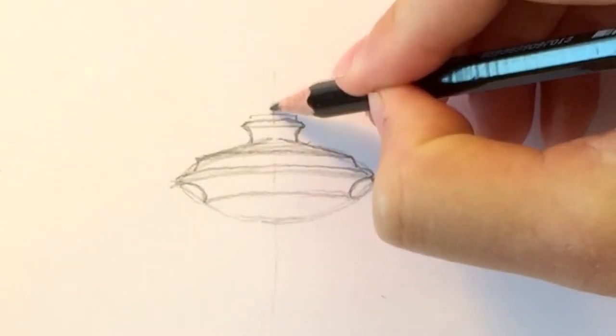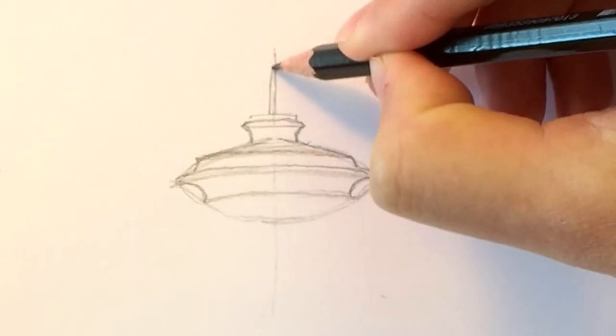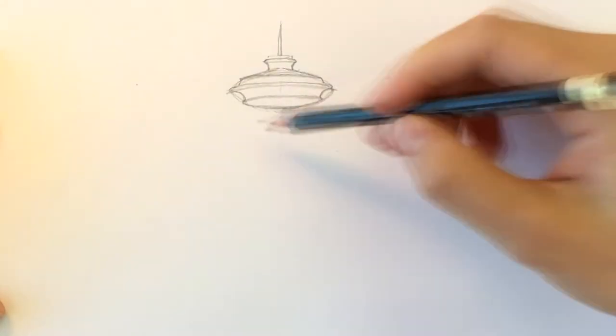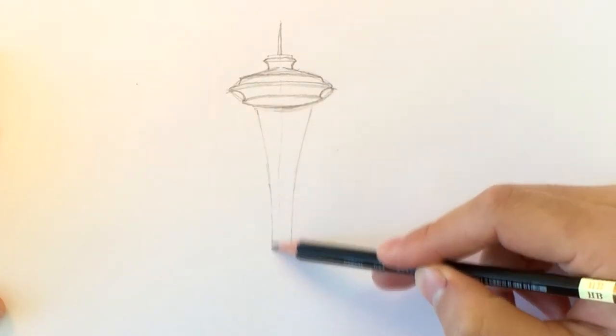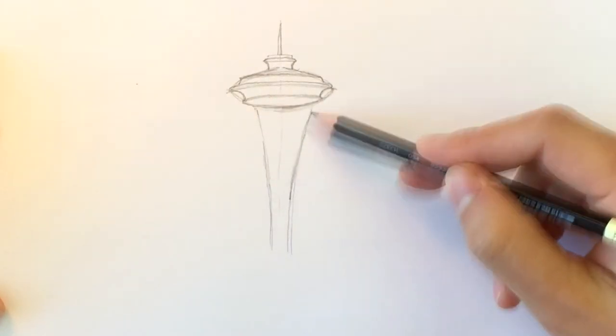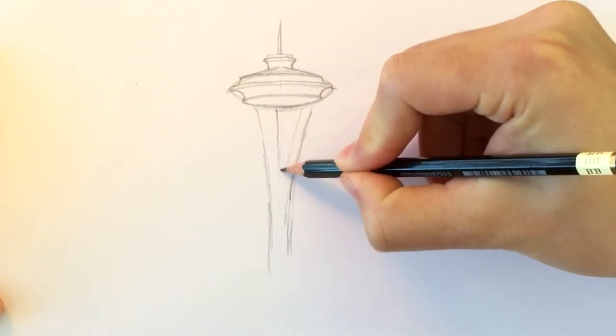And at the very top, we have the famous needle. For the tower structure and legs, I will only draw half of it because we will add the Seattle skyline behind it later on to make it look more complete.